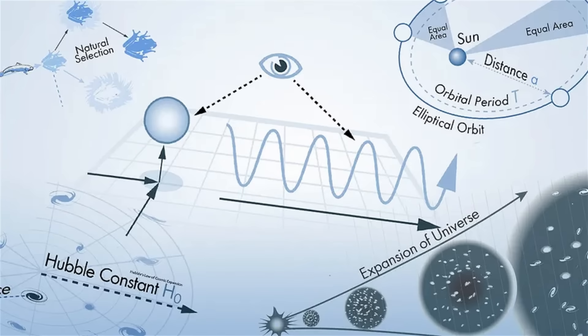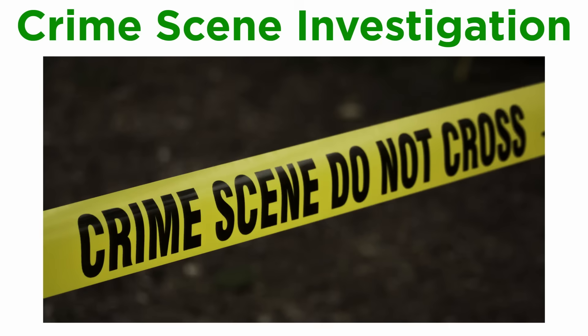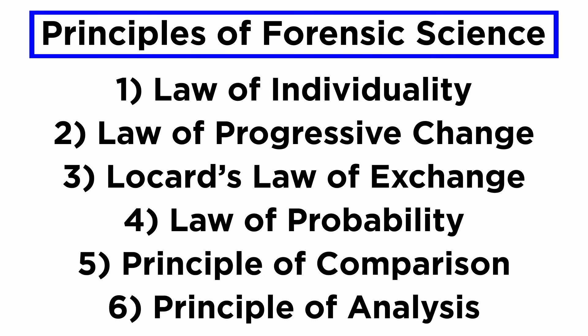Like all other sciences, forensic science is based on certain principles and laws. They serve as the foundation for CSI. Altogether there are six important principles of forensic science, which we will learn about in detail before moving on to actual investigative techniques.